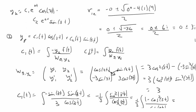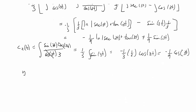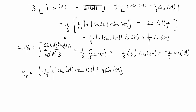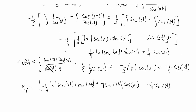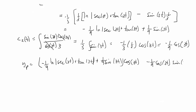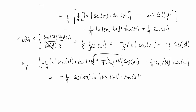Now we write the full particular solution: yp = c1(t)·cos(3t) + c2(t)·sin(3t). Substituting: [−(1/9)·ln|sec(3t) + tan(3t)| + (1/9)·sin(3t)]·cos(3t) + [−(1/9)·cos(3t)]·sin(3t). The (1/9)·sin(3t)·cos(3t) terms cancel, leaving the final answer: yp = −(1/9)·cos(3t)·ln|sec(3t) + tan(3t)|.